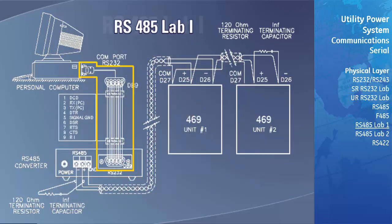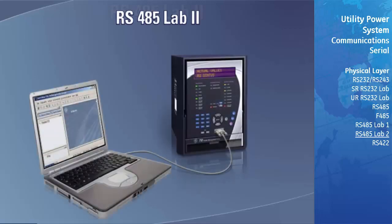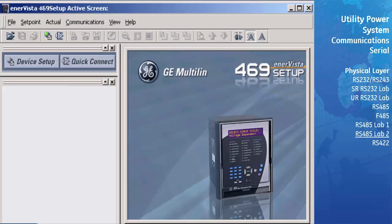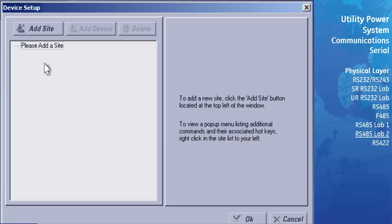Connect the serial cable between the computer and the F485 as shown. This section will guide you through the process of setting up a 469 LAN with the EnerVista 469 setup software. The first step is to configure the communications to allow us to talk to the relay, by selecting the Device Setup button located above the online window on the left side of the screen.